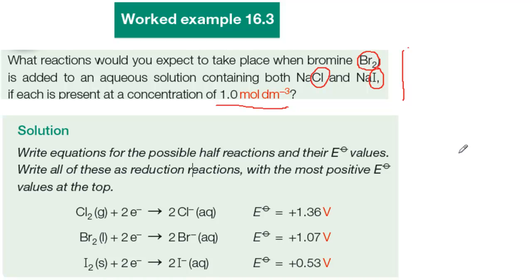The rule to remember is that the more positive the value of E standard for a reaction, the greater the tendency to go in the direction written.